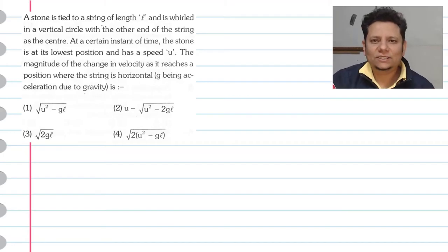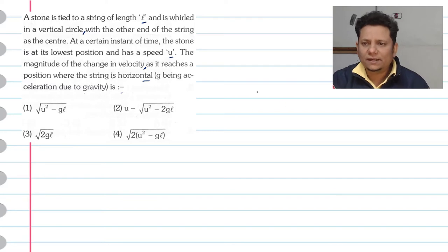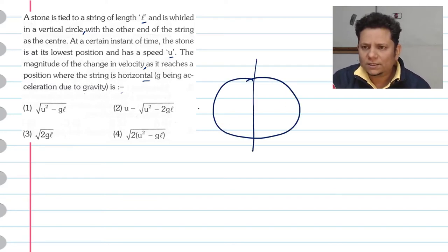Next question. A stone is tied to a string of length L and is whirled in a vertical circle with the other end of the string at the center. At a certain instant of time, the stone is at its lowest position and has a speed U. The magnitude of the change in velocity as it reaches a position where the string is horizontal, G being acceleration due to gravity, is...